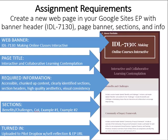Create a new web page in your Google Sites electronic portfolio. You need a banner labeled with the class IDL 7130: Making Online Classes Interactive, and a page title that includes the assignment title: Interactive and Collaborative Learning Contemplation. Required components include accessible, chunked-up content, clearly identified sections, section headers, high-quality aesthetics, and visual consistency.